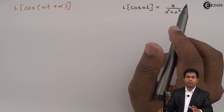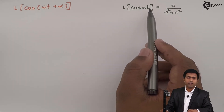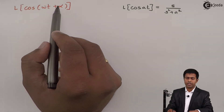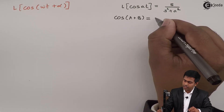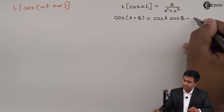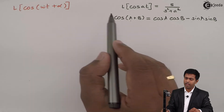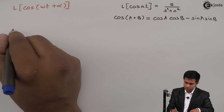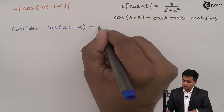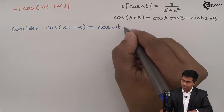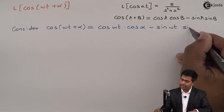So I want to expand this term and reduce it in such a way that I can apply the formula in the form cos(At). For that, I will expand cos(ωt + α) using the formula cos(A+B) = cosA·cosB − sinA·sinB. Here ωt is A and α is B. Therefore, cos(ωt + α) = cos(ωt)·cos(α) − sin(ωt)·sin(α).